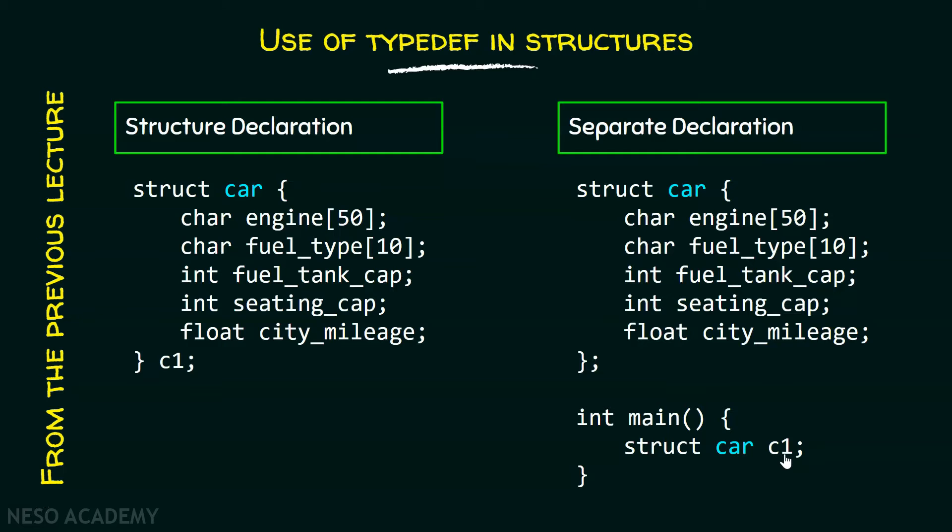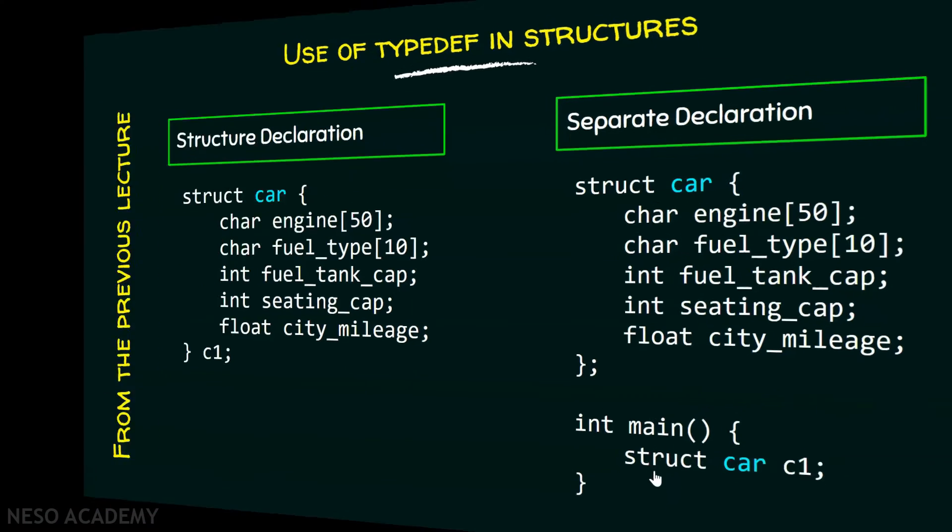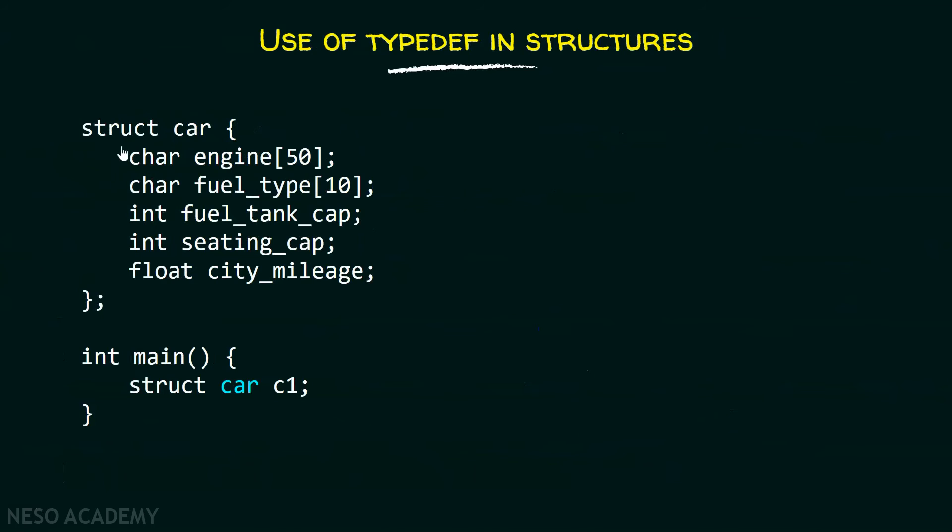Here, this variable c1 is declared within the local scope, that is within the main function. Now, instead of writing this whole type every time in our main function, we can replace this type by a new type using typedef.